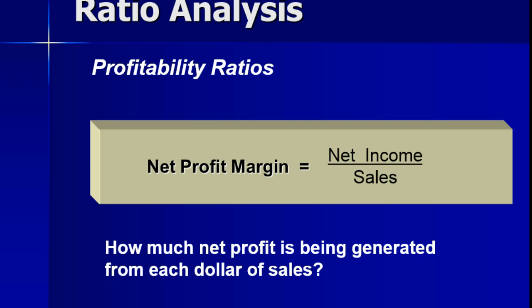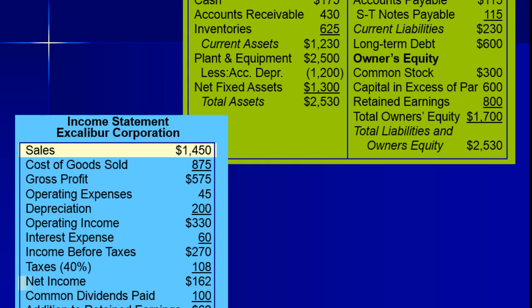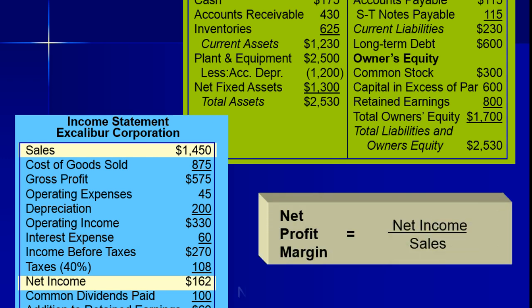The net profit margin is the very end, and this is closer to what the actual shareholders are going to get in profits. What comes out of this would be taxes — that's the main thing that separates operational from net income. One way to improve your net income is definitely to be able to improve the way that you manage your taxes.